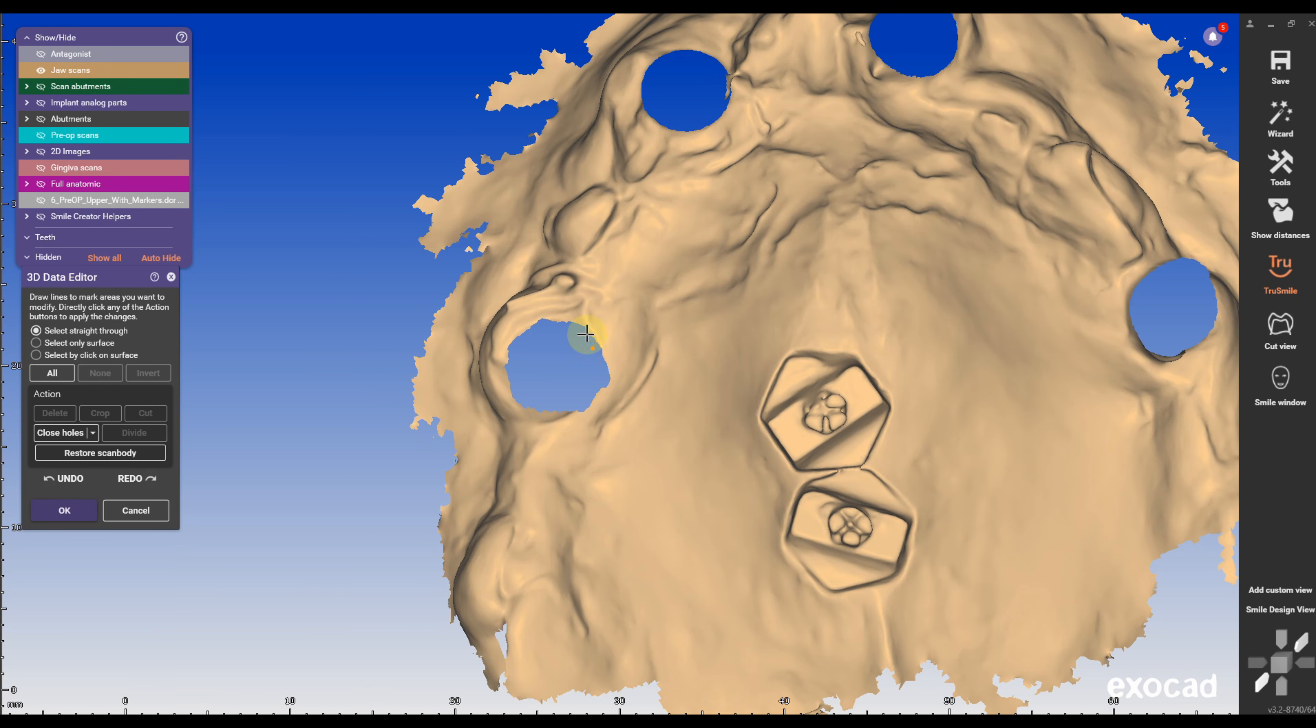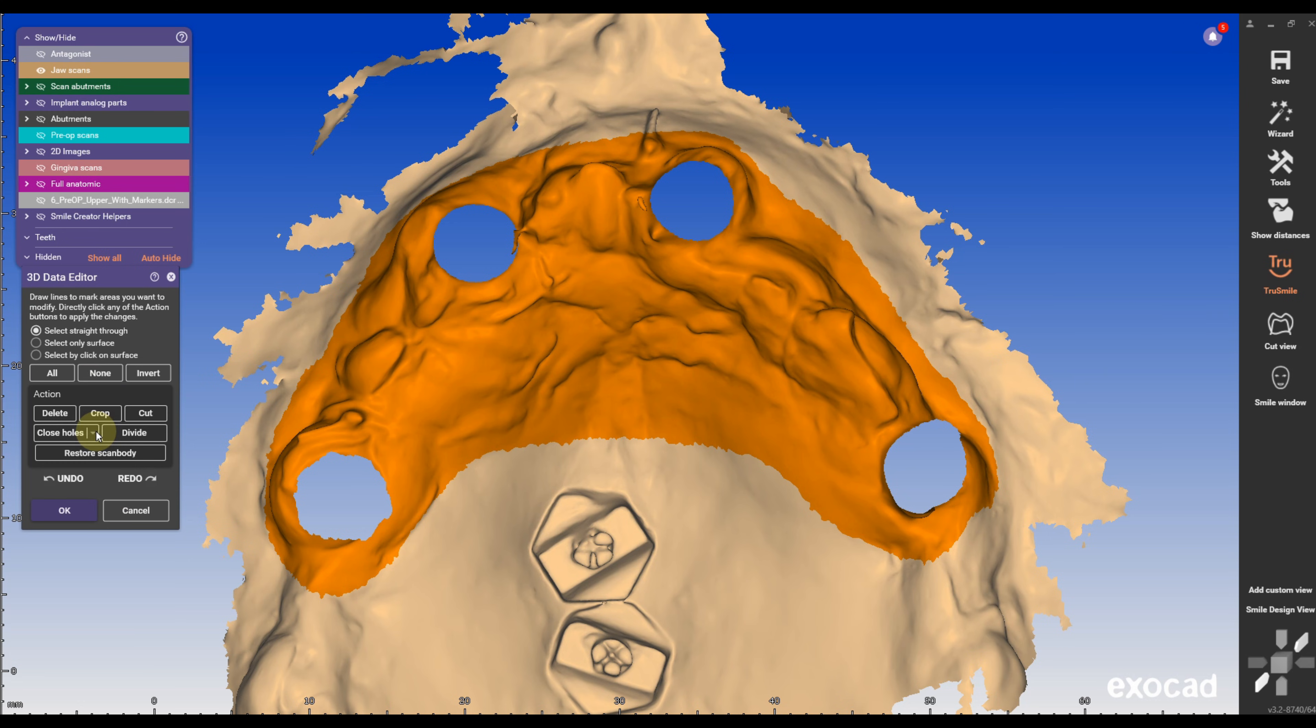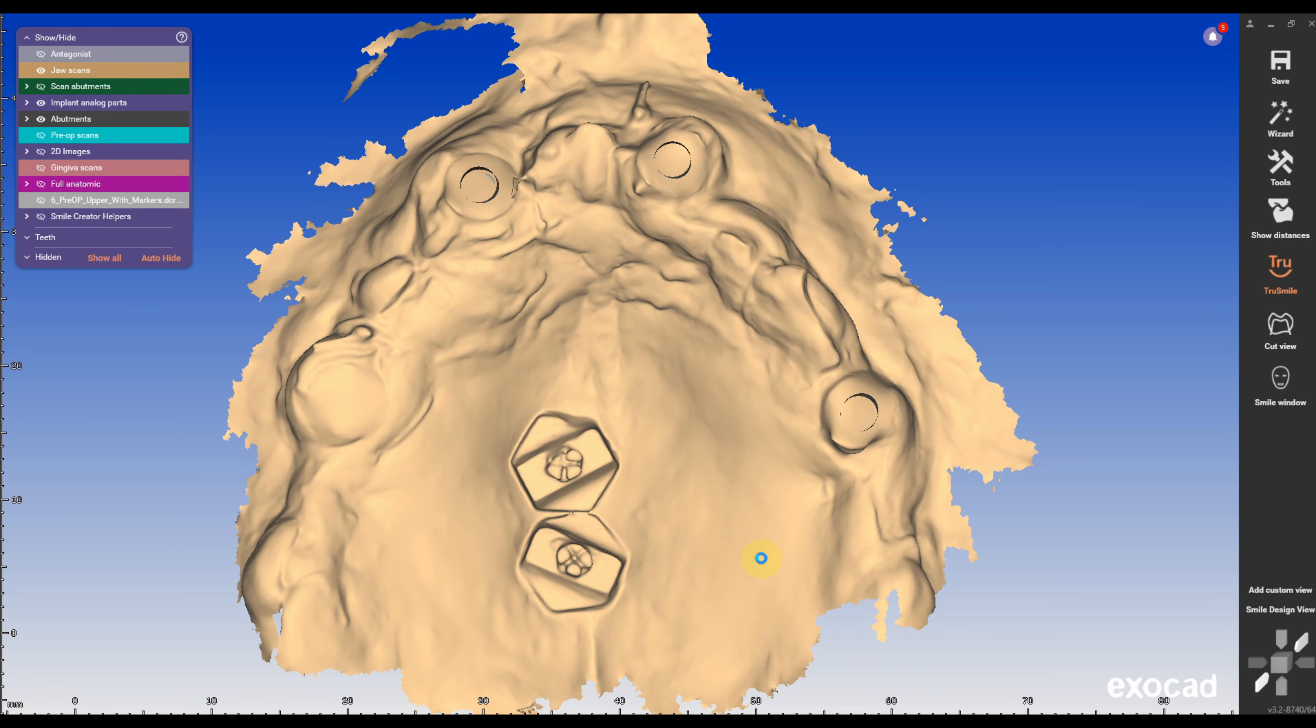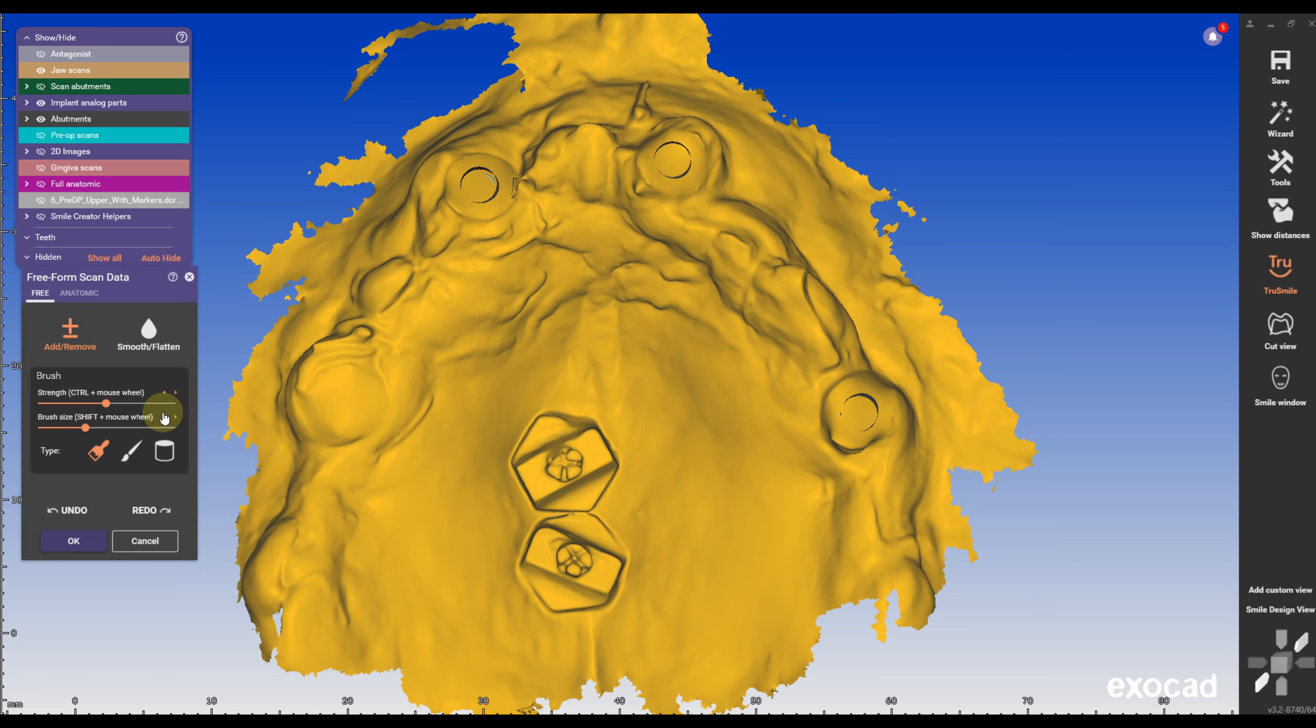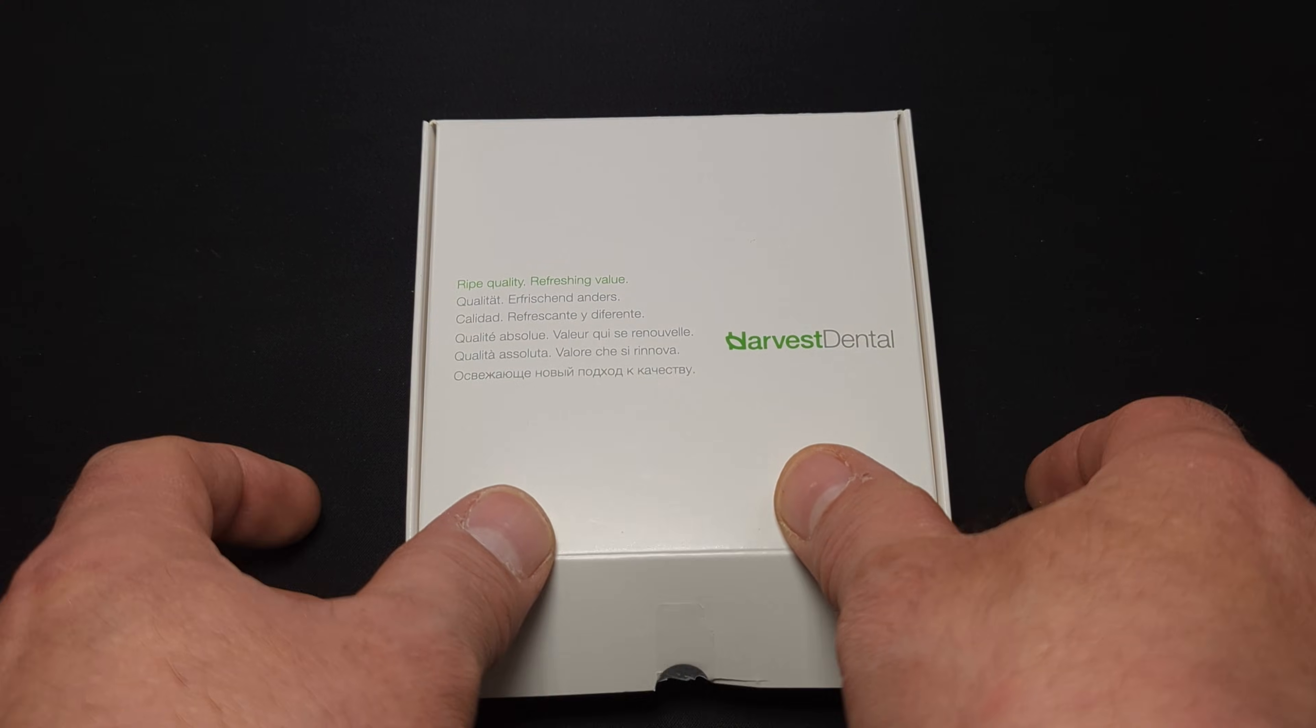After aligning all the photogrammetry scans, I clean up the post-surgery tissue scan, and under Edit Mesh, I close holes and remove artifacts. Then, using free-form scan data, I gently smooth out the scan as the tissue is still very soft and flexible.